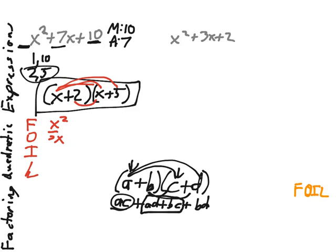Our inner items, 2 times x, which is 2x. And our last items, 2 times 5, which is 10. Combined like terms, we have the 2x and 5x, giving us 7x, and we're back to where we started from.